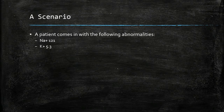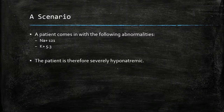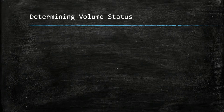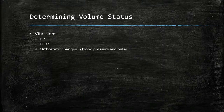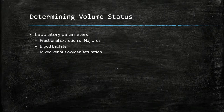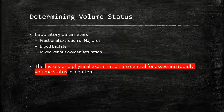When encountering a patient who is severely hyponatremic, after carrying out the ABCDE initial assessment and looking for symptoms and signs of hyponatremia, we would assess the volume status to determine management. Volume status can be hypovolemic, euvolemic, or hypervolemic. Volume status is determined by looking at vital signs, physical examination, as well as laboratory parameters, but history and physical examination are key.